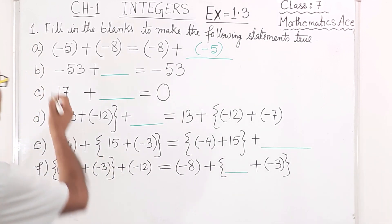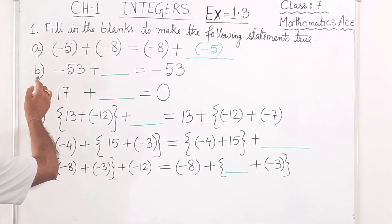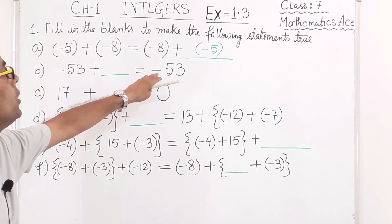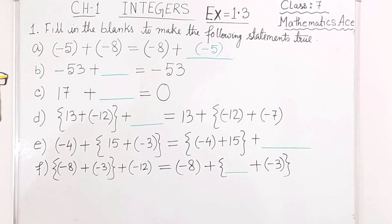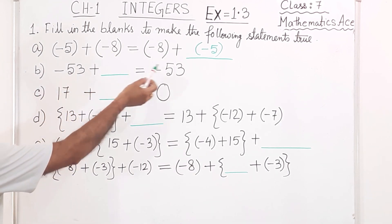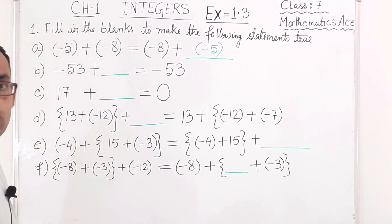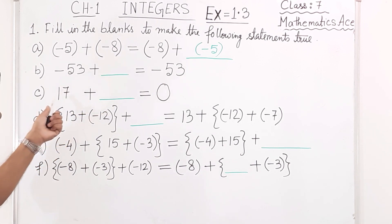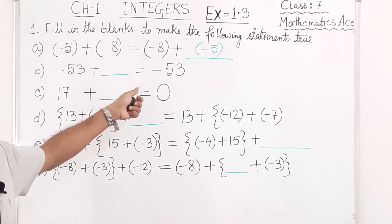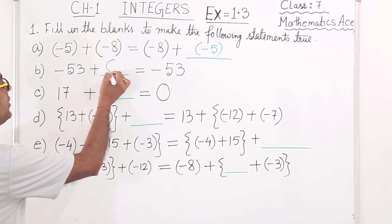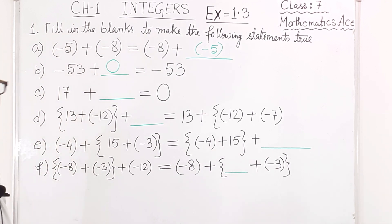Next one, question B: (-53) + ___ = (-53). So what integer are you adding that gives the same result? This is the additive identity. When you add 0 with any integer, the answer will be that same integer only. So this is the additive identity of addition.